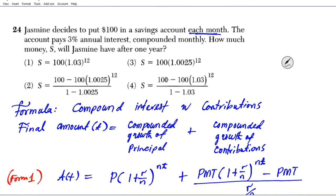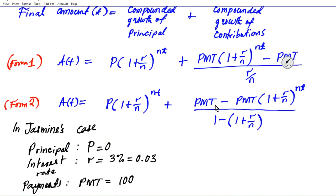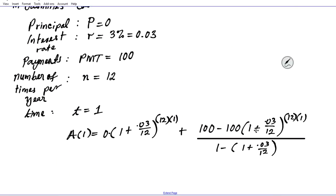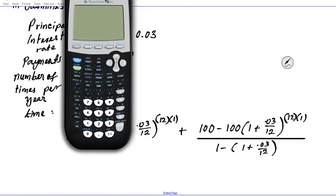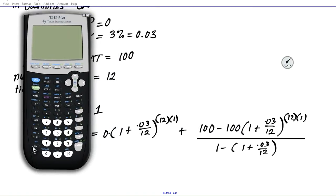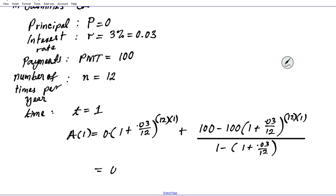We're going to evaluate what this quantity in the parenthesis is and then plug it into the formula. What is 1 + 0.03/12? It's 1.0025. So this problem becomes 0 + [100 - 100(1.0025)^12] divided by [1 - 1.0025].